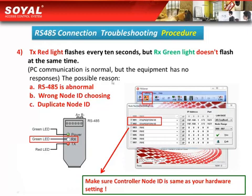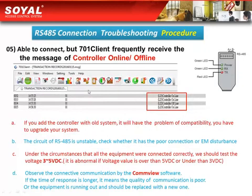When you choose the node ID, make sure the node ID set on the software matches the setting of the controller. Fifth, if RS485 is able to connect but the 701 client frequently receives messages of 'controller online' or 'controller offline,' there may be an intermittent connectivity issue.